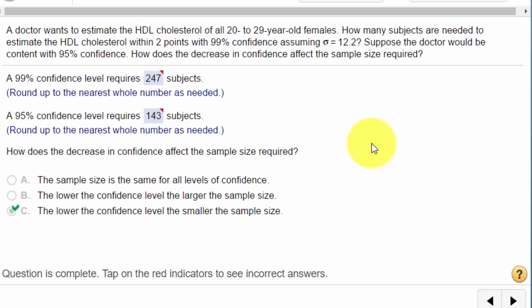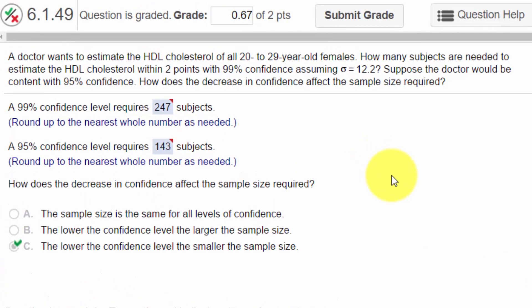This is another problem that we can solve very quickly using StatCrunch, instead of going through the fairly complex equations for finding the number of subjects that we require. In this case, we've got a doctor who wants to estimate the HDL cholesterol for all 20 to 39 year old females, how many subjects are needed to estimate the HDL cholesterol within two points with a 99% confidence interval, assuming sigma equal 12.2. So again, we've got sigma, which is the population standard deviation. That's a major clue that we use the normal distribution, the Z distribution, to solve this problem. And then they want to know what would be the sample size with 95%, and what happens as you decrease the confidence to the sample size.